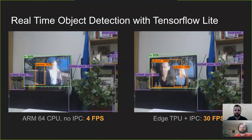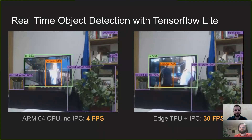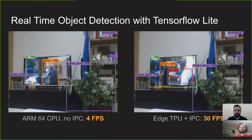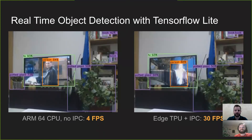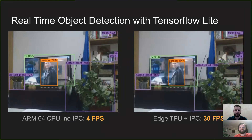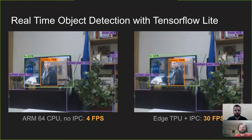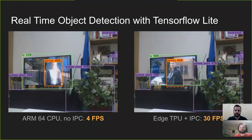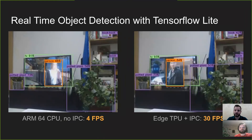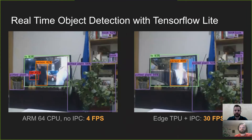Next, we needed perception. We were already fully on the deep learning bandwagon, so we wrote a package that wraps TensorFlow Lite to support image classification, semantic segmentation, and, as shown here, object detection.